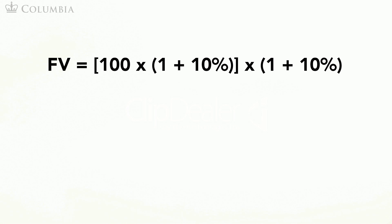As you have probably realized, we can combine these two operations. At the end of the first year, we have 100 times 1 plus 10%, and we then multiply this amount again by 1 plus 10%. The final answer is then 100 times 1 plus 10% squared.